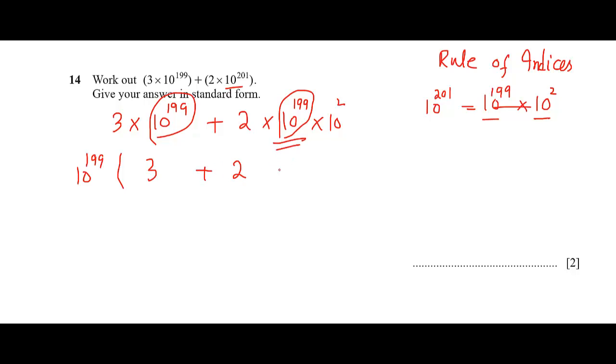This is common we have taken out, and this 10 to the power 2 is basically 100. So this is 200 plus 3, this will become 203. Therefore it is 203 times 10 to the power 199.